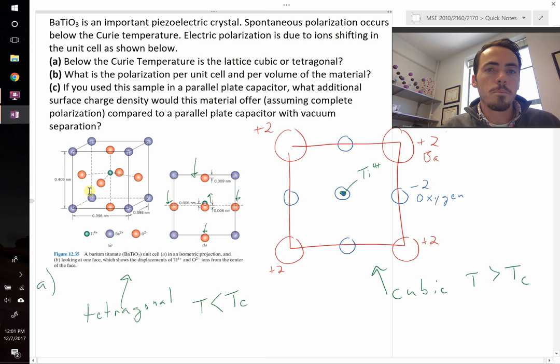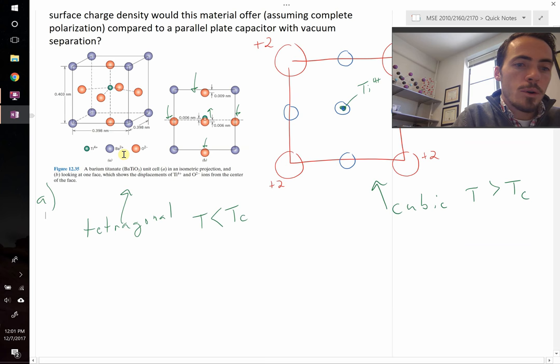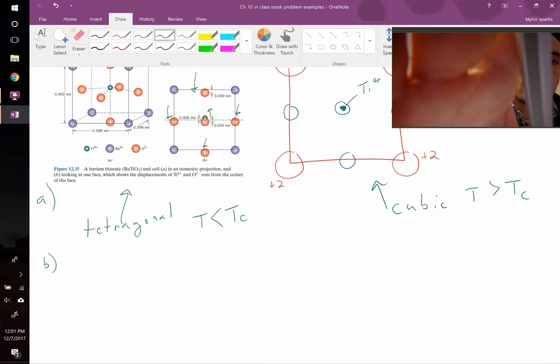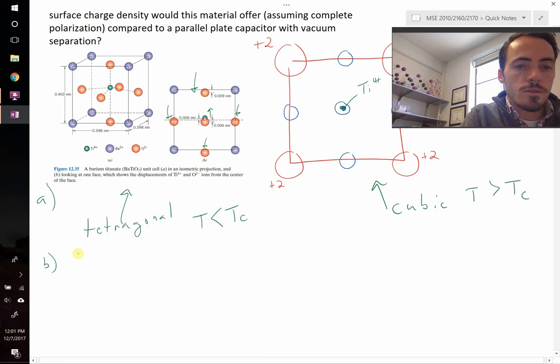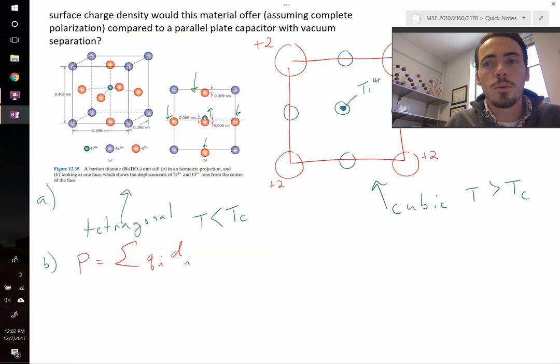So that's part A. What about part B? Part B asks, what would be the polarization per unit cell and then on a per volume basis? So let's go ahead and do that. Per unit cell. Well, how do we know what polarization is? Polarization for a material, we can calculate if we know the individual charge and how it's been shifted. So the polarization is going to be equal to the summation of each individual charge, so Q_i, multiplied by the distance that it's shifted, D sub i.